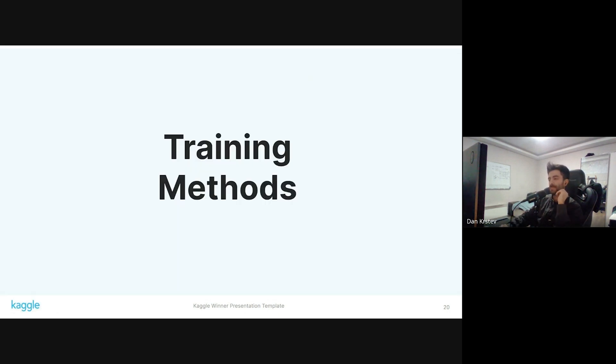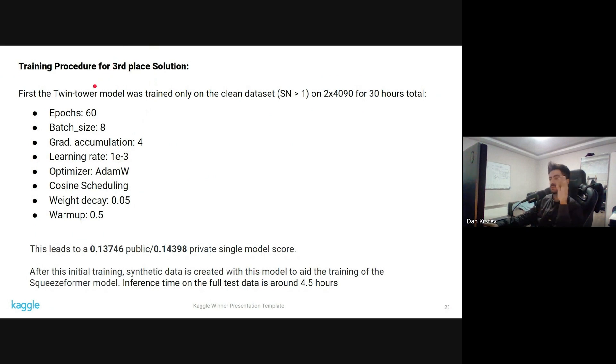The training methods to recreate the third place solution: First, the twin tower model was created on the clean dataset on two 4090s for about 30 hours total. 60 epochs, batch size was 8 because this model was memory intensive with grad accumulation. So in total on two GPUs, the effective batch size was 64. Learning rate of 1e-3, cosine scheduling, and all the rest is just pretty standard stuff. This leads to 0.13746 on the public and 0.14398 on the private, and this is a single model.